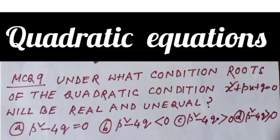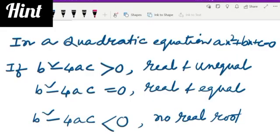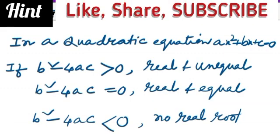The question is: under what condition will the roots of the quadratic equation x square plus bx plus q equals 0 be real and unequal? The hint used is: in a quadratic equation x square plus bx plus c equals 0, roots are real and unequal if b square minus 4ac is greater than 0.